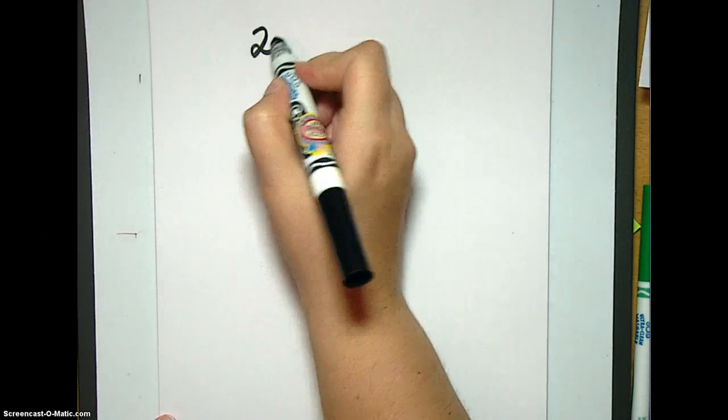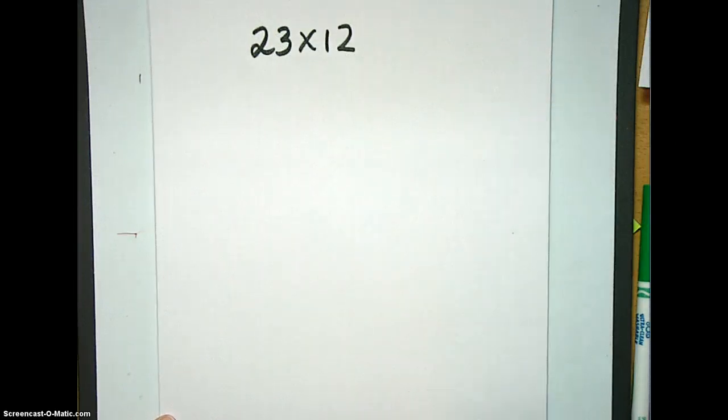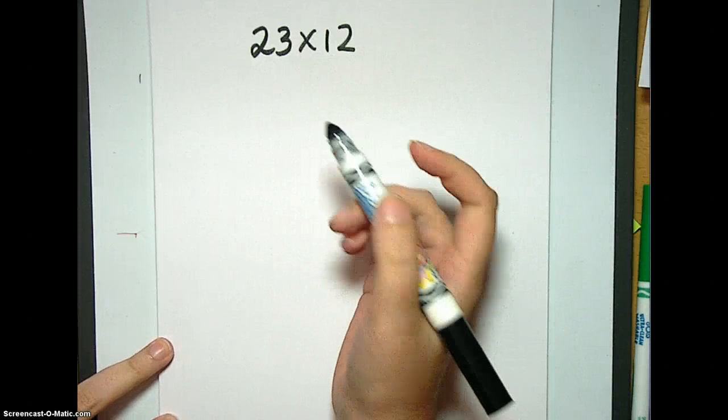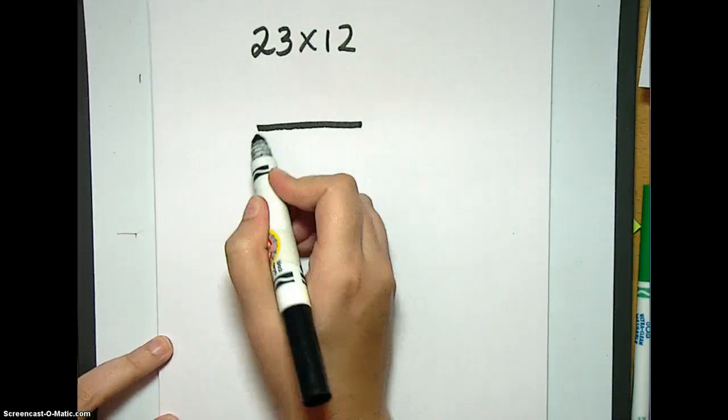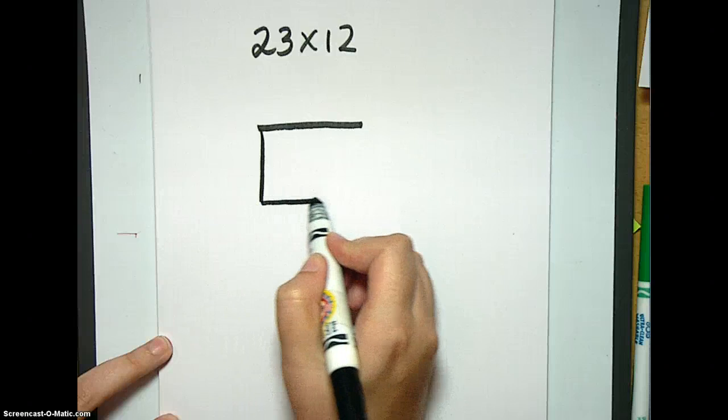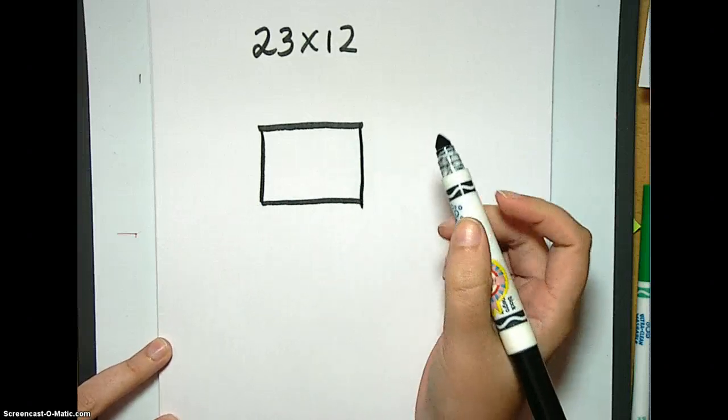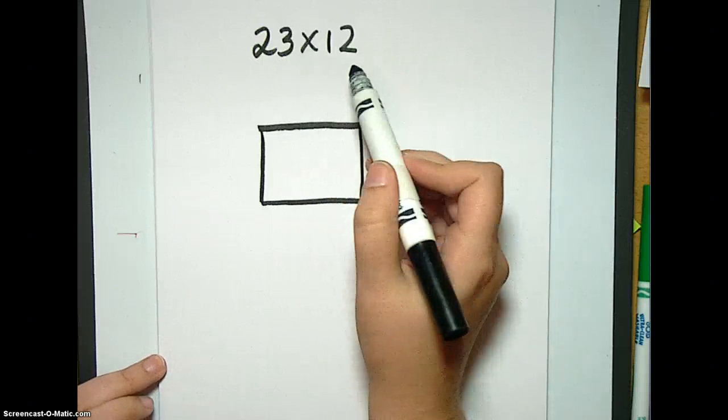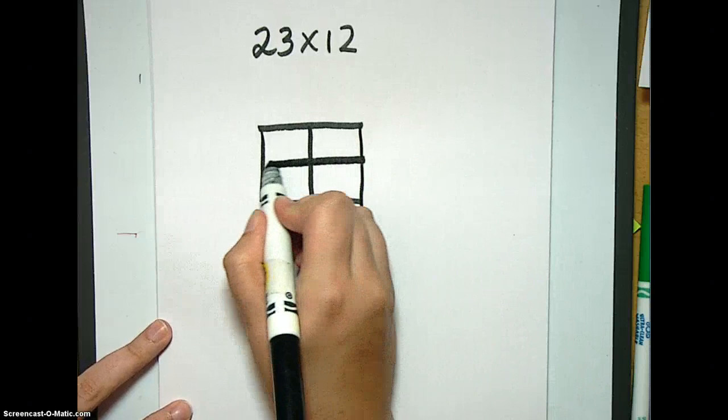So we're going to do 23 times 12. And you remember with the lattice method, we end up drawing a little chart and I'm going to show you how we do it. I start with just making a square. You know how big you want to make your boxes by how many numbers you're multiplying by. You're going to have two rows and two columns because both of your numbers are two digits.